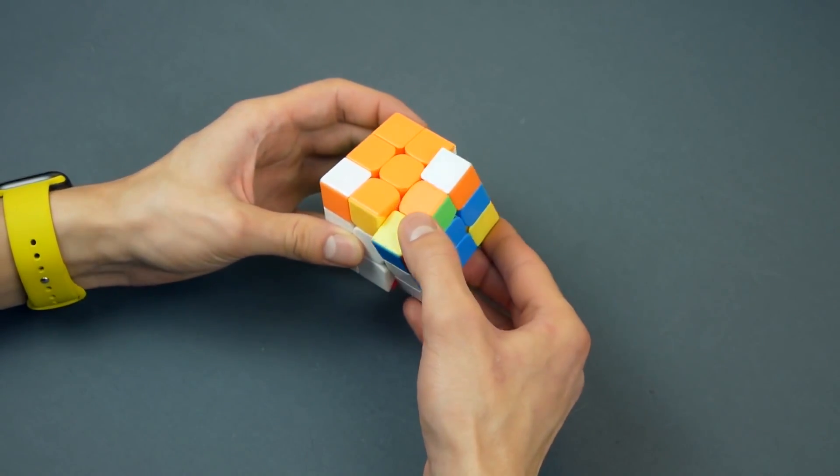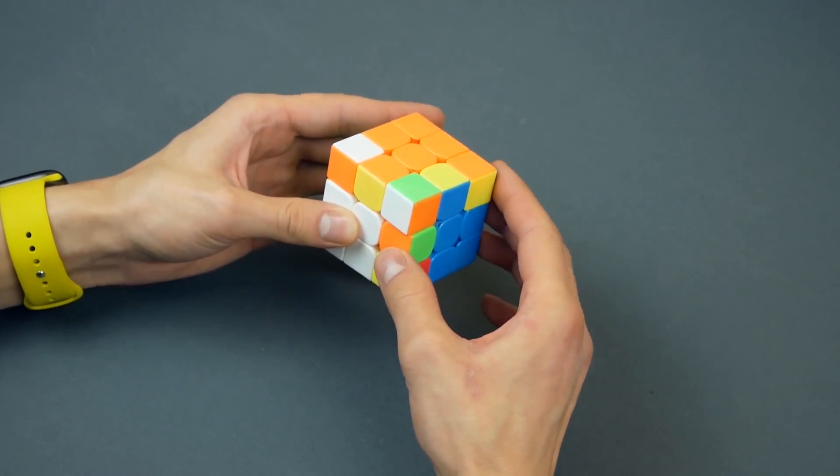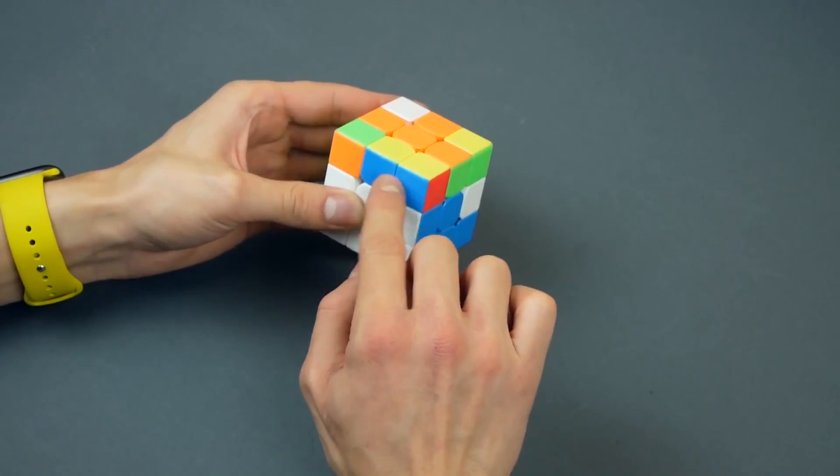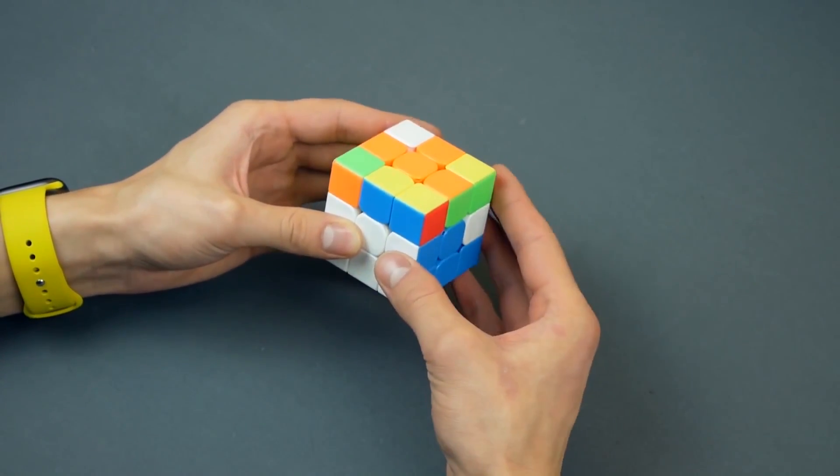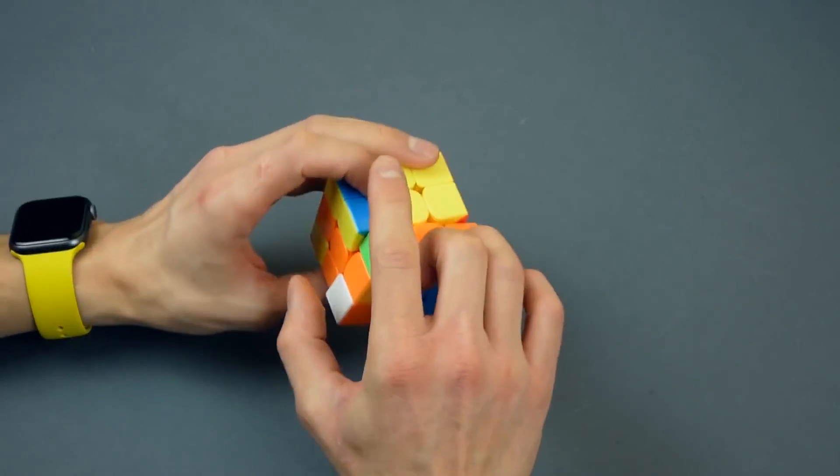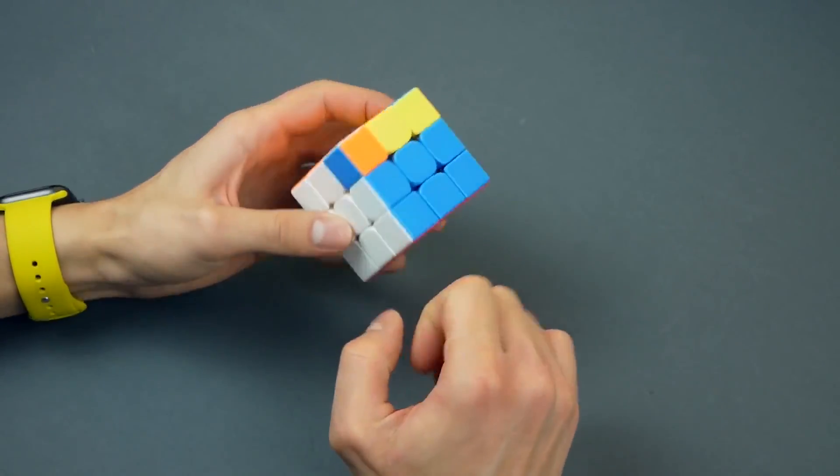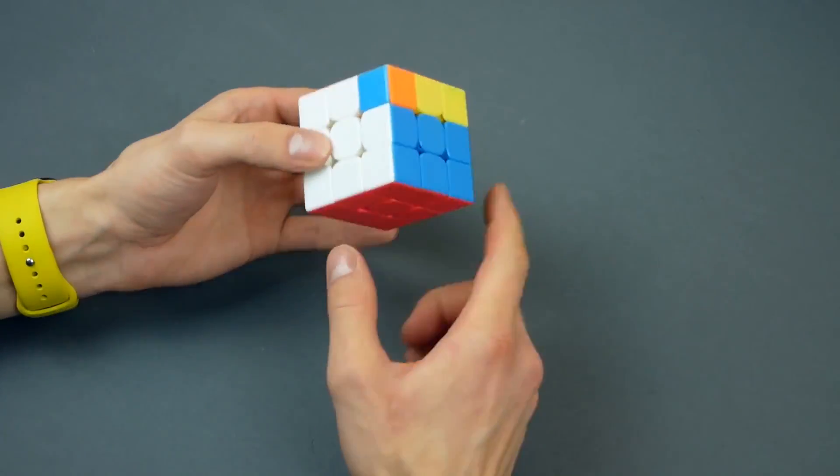He sees another pair and keeps on turning to move this element up and finish the last pair on the top. All he has to do now is to put it back. One, two, three. So now the pair is on its place and the second step is done.